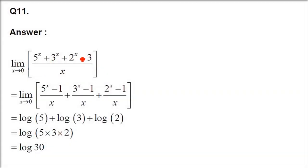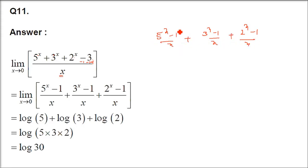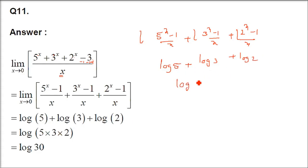Question 11: limit x→0 of (5ˣ + 3ˣ + 2ˣ - 3)/x. Same approach: write -3 as -1-1-1. So (5ˣ-1)/x + (3ˣ-1)/x + (2ˣ-1)/x. Applying limit: log 5 + log 3 + log 2 = log(5·3·2) = log 30 (base e).